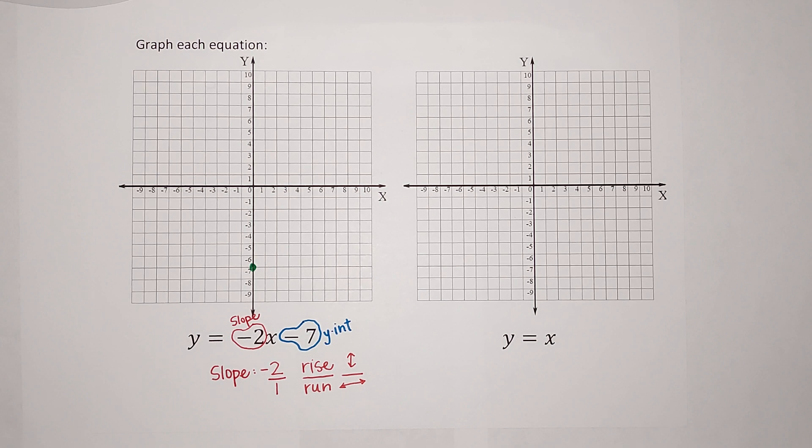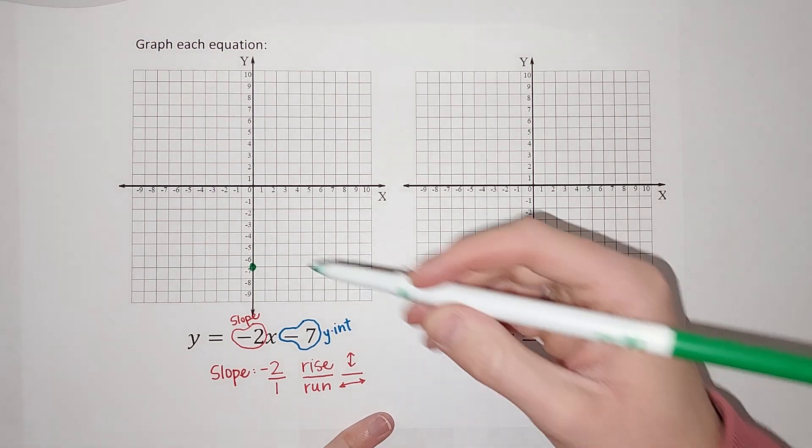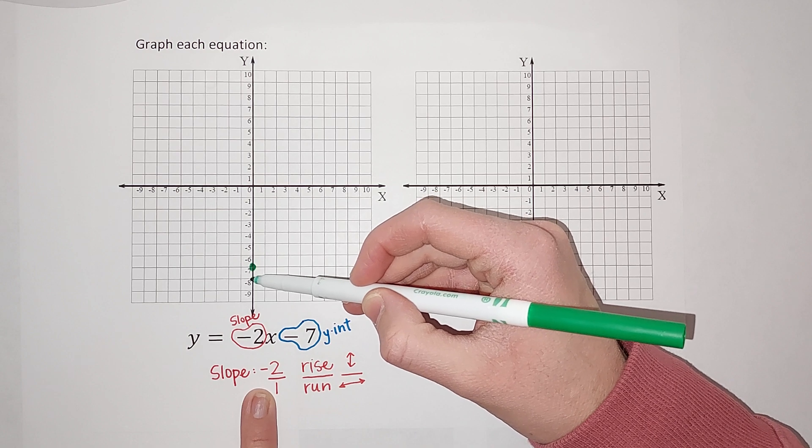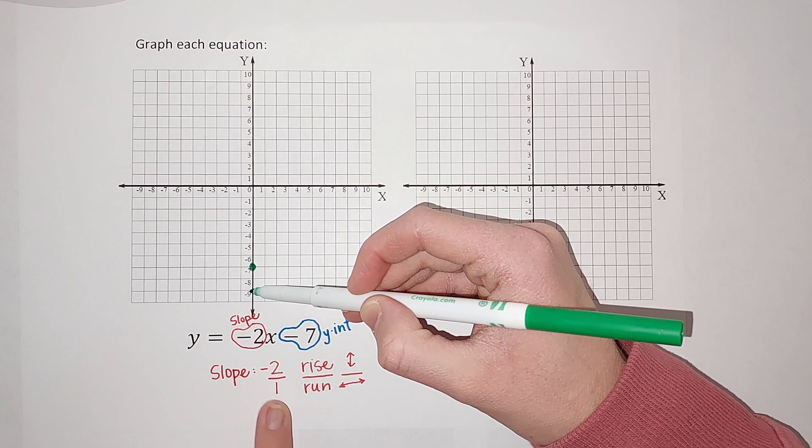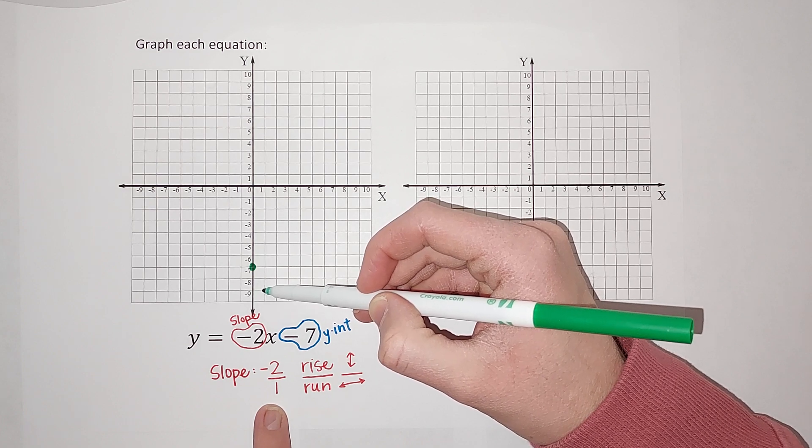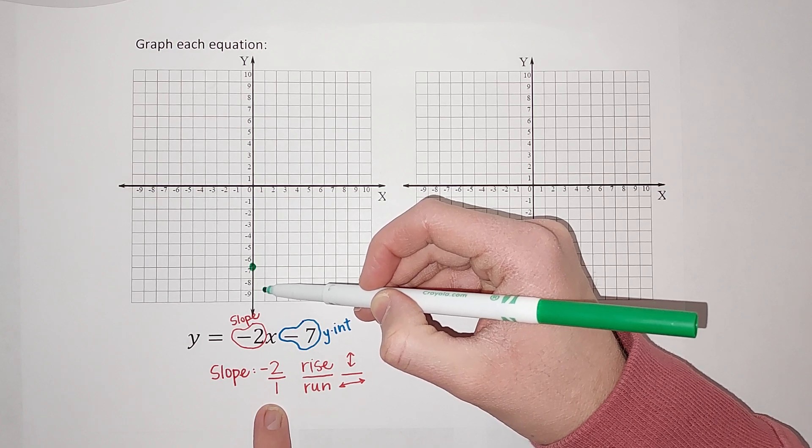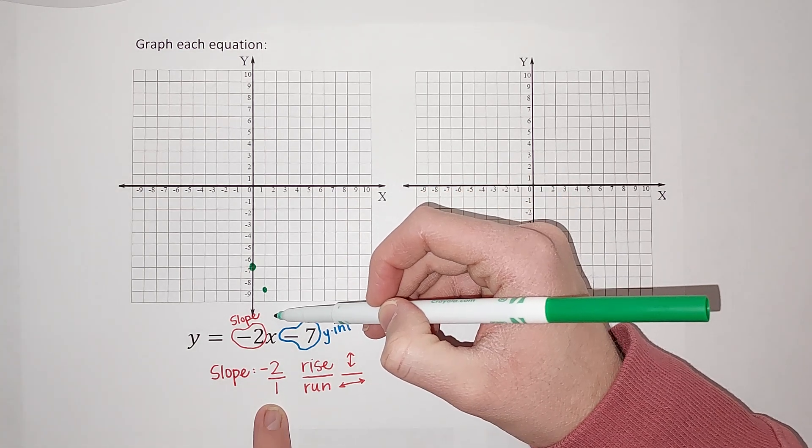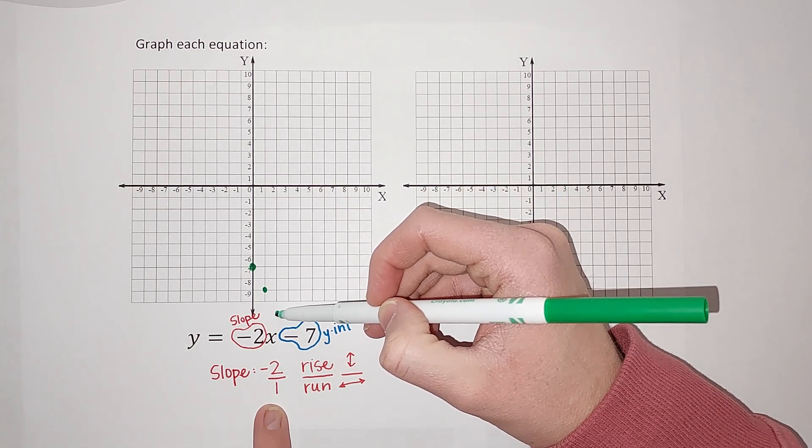And basically all that means is you do up and down over right and left. So what that means is my slope is negative 2 over 1. So that means I'm going to do up and down first. So I'm starting here. My slope is negative 2. So I'm going to go down 2 over 1. It's a positive 1. So I'm going to go to the right one. And there is my next point. I could go down 2 over 1 again. It's off my graph, but it would be about there, right?